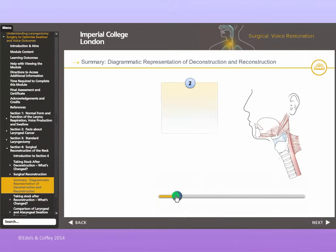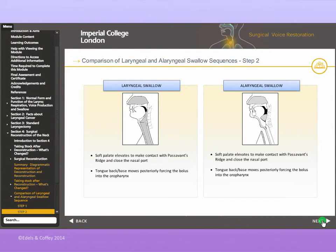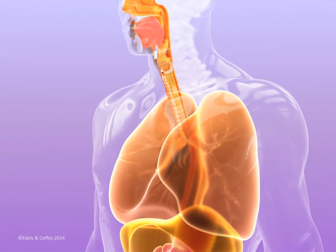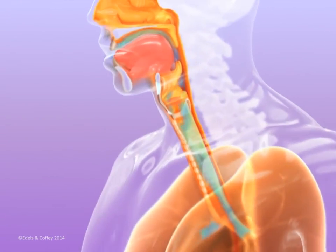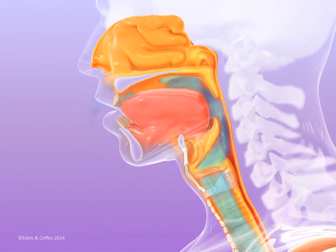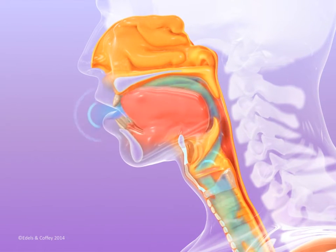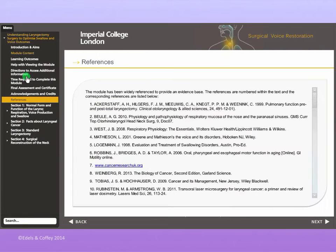Deconstruction and reconstruction are neatly summarised and essential pre- and post-operative functions compared. Nine innovative 3D animations of the pre- and post-operative states, as well as the surgery, progress under the user's control. The module is fully referenced and accessible via the references option.